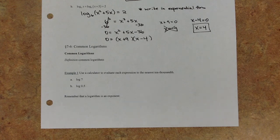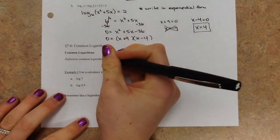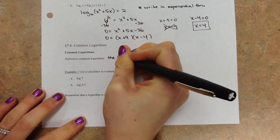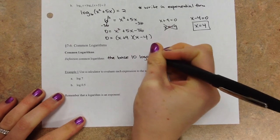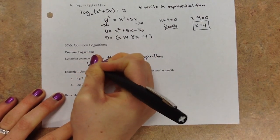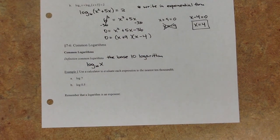Log base 2 and log base 3 aren't used very often, but the common log is — that's actually why we call it the common log, because it's used so frequently. The common log is log base 10. The base of the common logarithm is 10. It's a really nice base — a nice easy number.